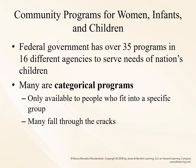Many problems associated with maternal, infant, and child health have been identified in the preceding slides. Solutions for many of these problems have been proposed and in many cases programs are already in place. Some programs are aimed at preventing or reducing maternal and infant morbidity and mortality, while others target childhood morbidity and mortality. The federal government has over 35 programs and 16 different agencies to serve the needs of the nation's children. Many are categorical programs, available only to people who fit a specific group based on disease, age, geography, or financial need — meaning many children fall through the cracks.